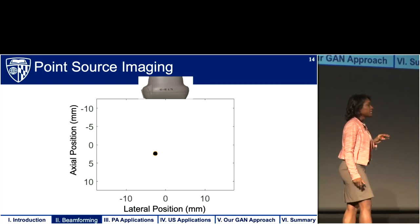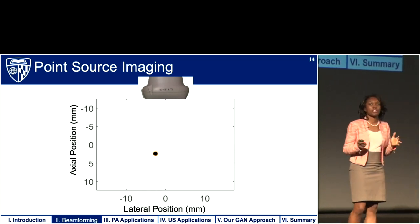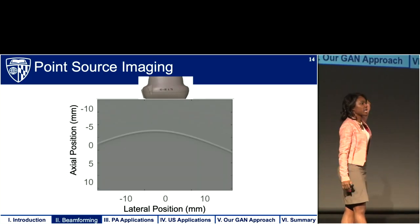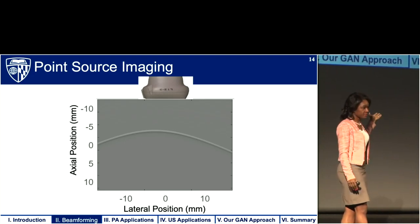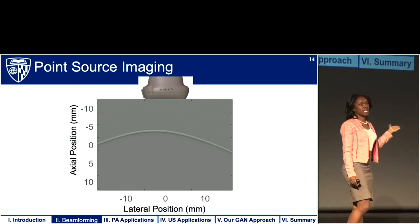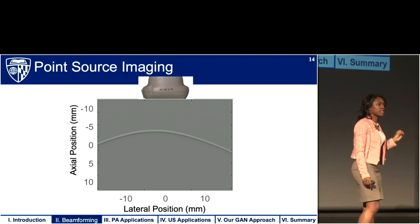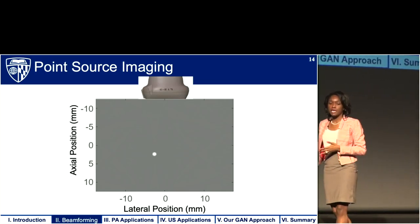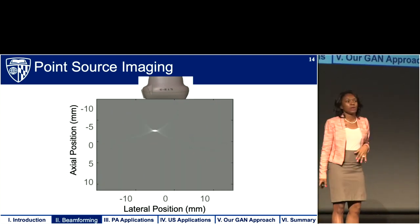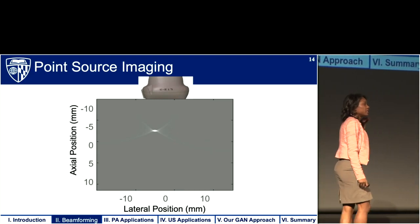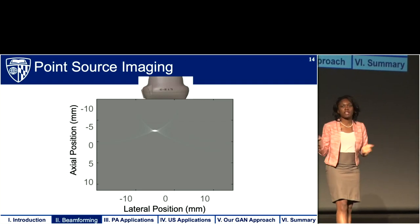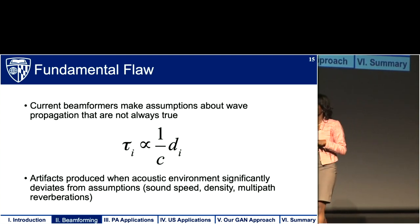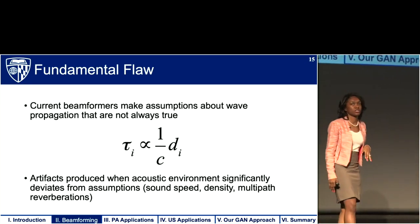In simulation, a point source propagates outward spherically toward our transducer. The transducer senses the signal on each element and we get a recording — our raw channel data. We want to beamform this channel data so it looks like the source that created the recording. Ideally it would look like a perfect point, but when we apply today's beamformers we might instead get something where we don't have a perfect circle, the source does not appear at the correct depth, and there are artifacts to the left and right of the source.